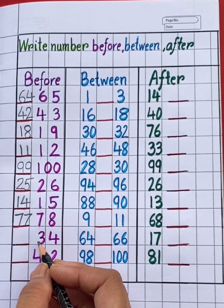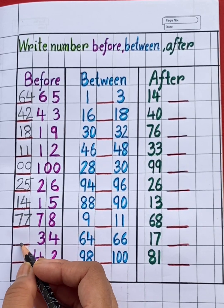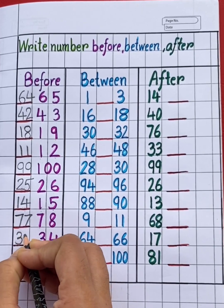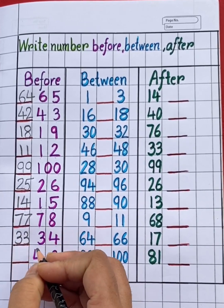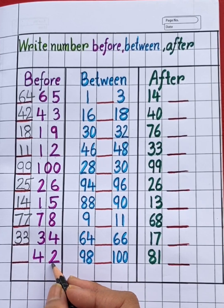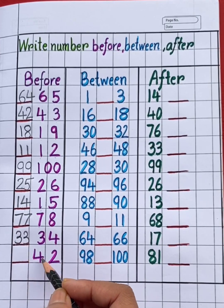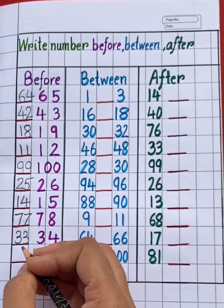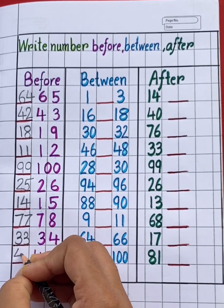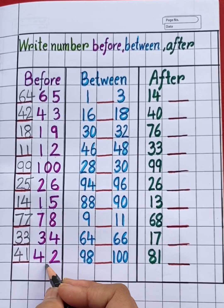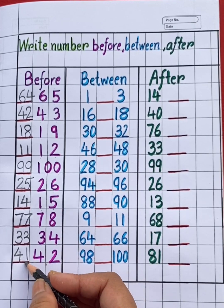Which number will come before 34? Yes, 33. Next number is 42. Which number will come before 42? Yes, 41. Before 42 is 41.